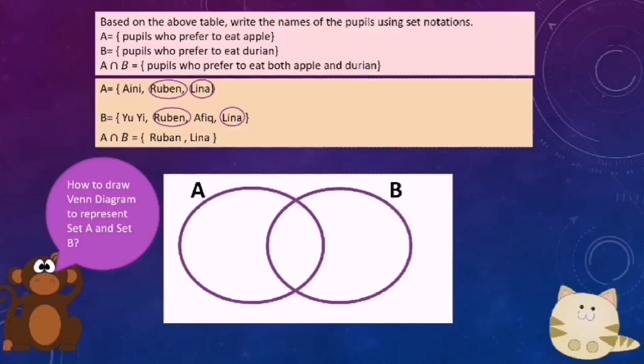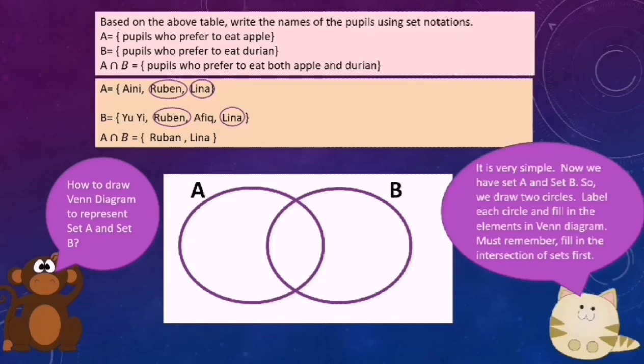After we list the elements of set A, B, and intersection of set A and B, now we look at how to draw a Venn diagram to represent set A and set B. It is actually very simple. We draw two circles — you can also draw other shapes besides a circle. Label each circle and fill in the elements in the Venn diagram.